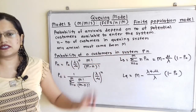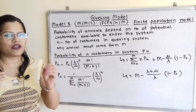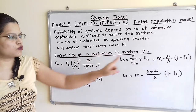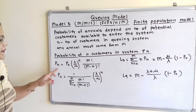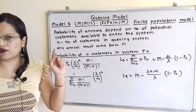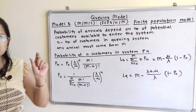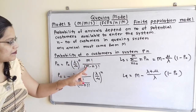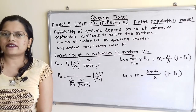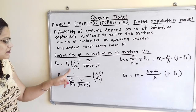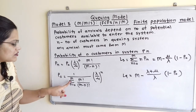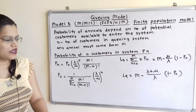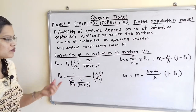The probability of N customers in the system is denoted PN. This formula depends on the value of capital M. Its formula is: PN = P0 multiplied by (lambda/mu) raised to N, multiplied by M factorial divided by (M minus N) factorial. To calculate P0, the probability of an empty system: P0 = 1 divided by the summation from N=0 to M of [M factorial divided by (M minus N) factorial, multiplied by (lambda/mu) raised to N].